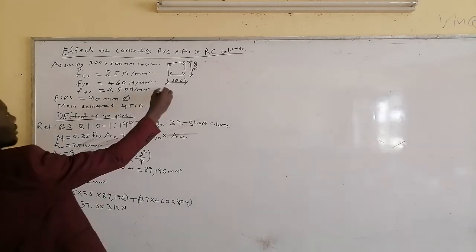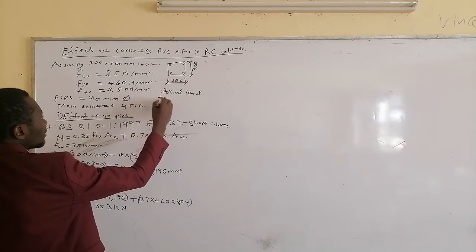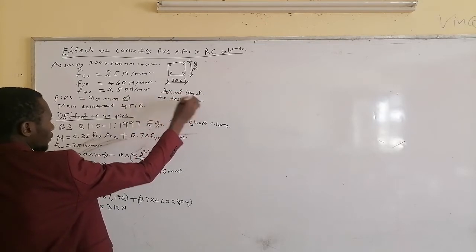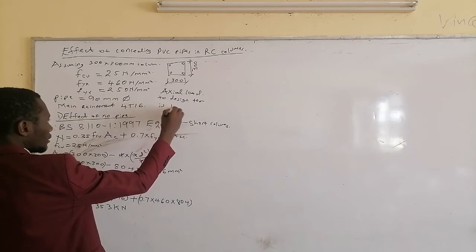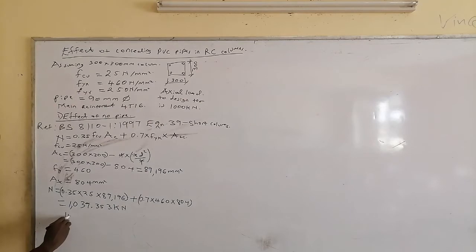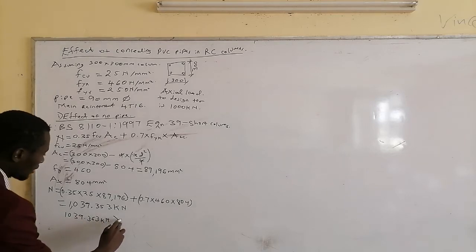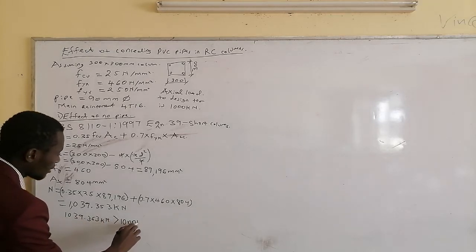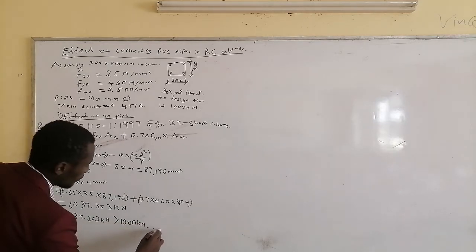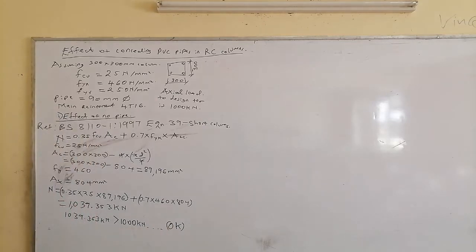Let's assume that the maximum load to be designed for is 1,000 kilo-newtons. Therefore, 1,393.53 kilo-newtons is actually greater than 1,000 kilo-newtons. Therefore, this is okay — we can use the column as it is without the pipe.